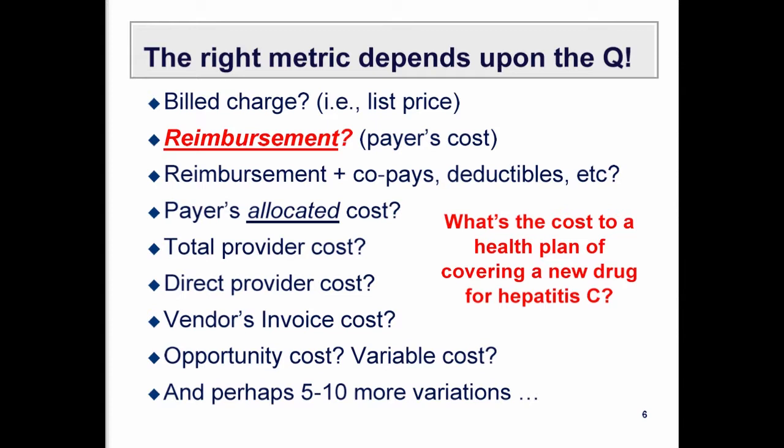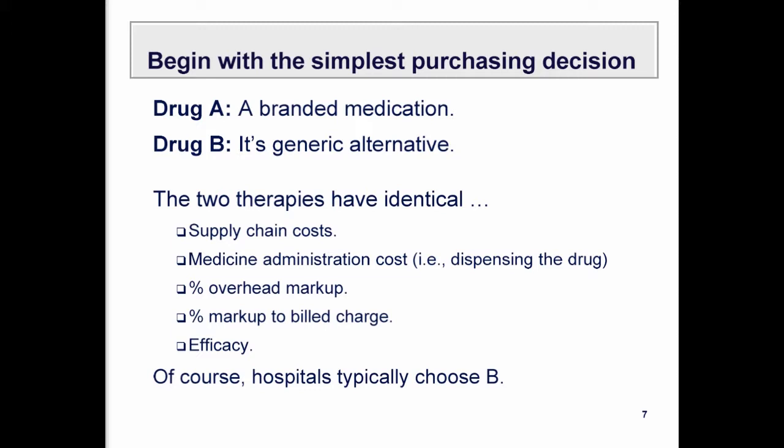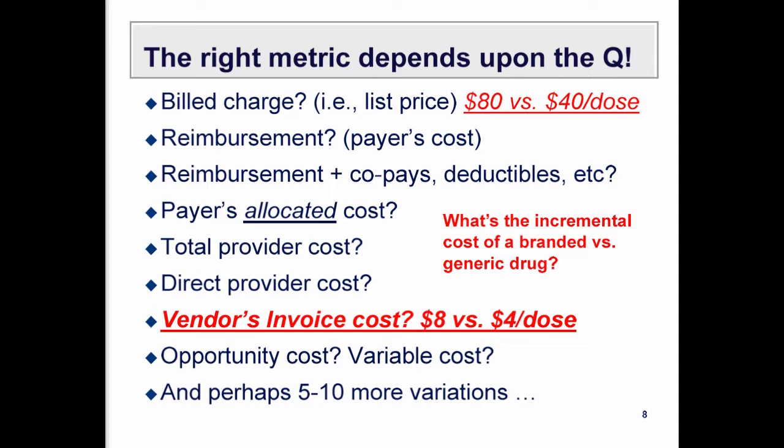For example, there's a new drug for hepatitis C — eighty-four thousand dollars for a full course of treatment. The focus is on what it costs the health insurer to reimburse that medication. In another context, when you have two drugs that are chemically identical and therapeutically equivalent — one branded, one generic — they'll have different invoice prices but the same supply chain costs, same cost of dispensing, same overhead markups, and the same efficacy.